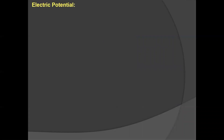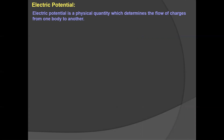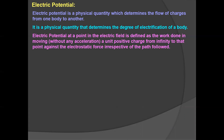We are going to discuss what is Electric Potential. Electric Potential is a physical quantity which determines the flow of charge from one body to another. This quantity is also termed as the degree of electrification of a body. It is defined as the work done in moving a unit positive charge from infinity to a given point per unit positive charge. So according to the definition, Electric Potential is the work done from infinity to a given point per unit positive charge.